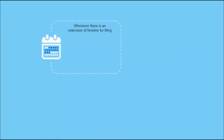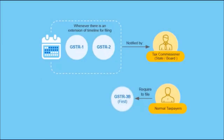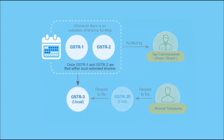Whenever there is an extension of timeline for filing GSTR 1 and GSTR 2, the same is notified by the tax commissioner of the state or the board and the normal taxpayers will be required to file GSTR 3B first. Later, the taxpayers will be required to file GSTR 3 as usual, once GSTR 1 and GSTR 2 are filed within such extended timeline.